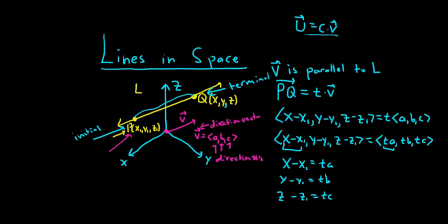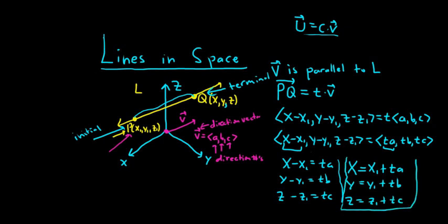If we solve for X, Y, and Z, right, we can add X1, Y1, and Z1. What happens is we get X equals X1 plus TA. Okay, Y equals Y1 plus TB. And then Z equals Z1 plus TC. These are called parametric equations for a line. And now we have the formula, right? This is our formula.